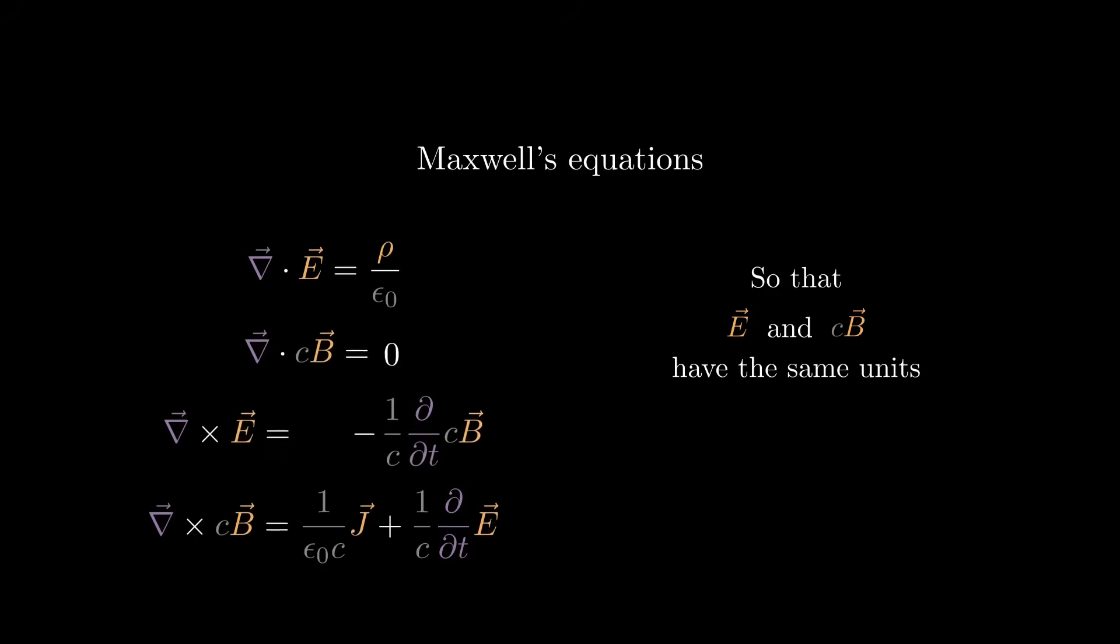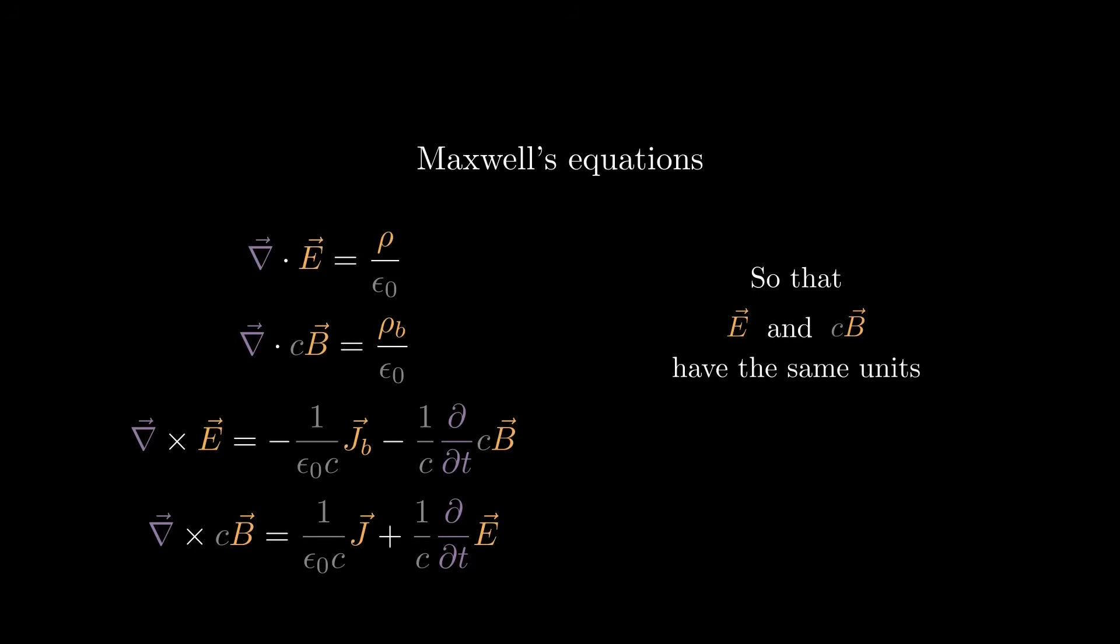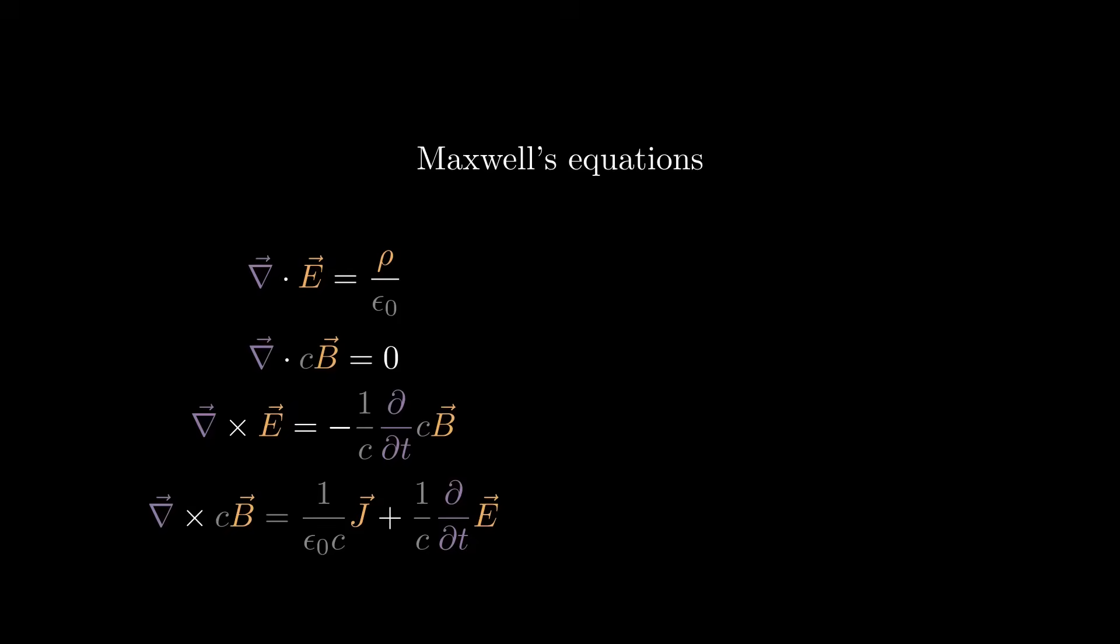So that the electric field and c times the magnetic field have the same units. And when we consider not only electric charges, but magnetic charges as well, the equations would look like this. We call them the generalized Maxwell's equations. More about that in a moment.